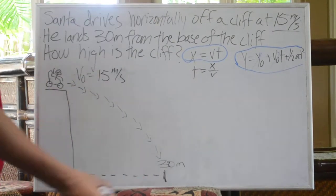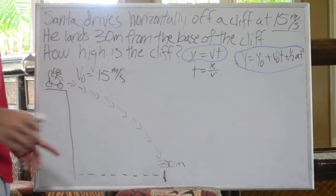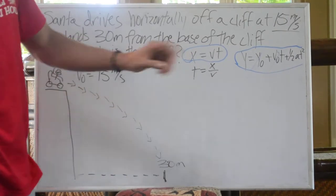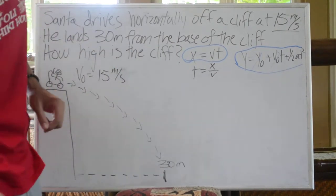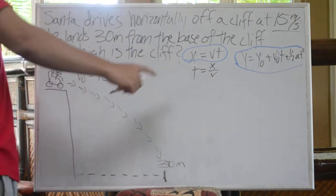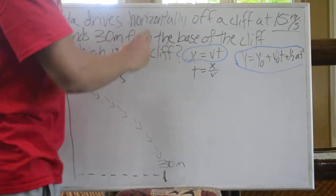To really understand this question, we must first look at the x-axis. The equation for the x-axis is x equals v times t, v being velocity, t being time. We can look at that also as t equals x over v.